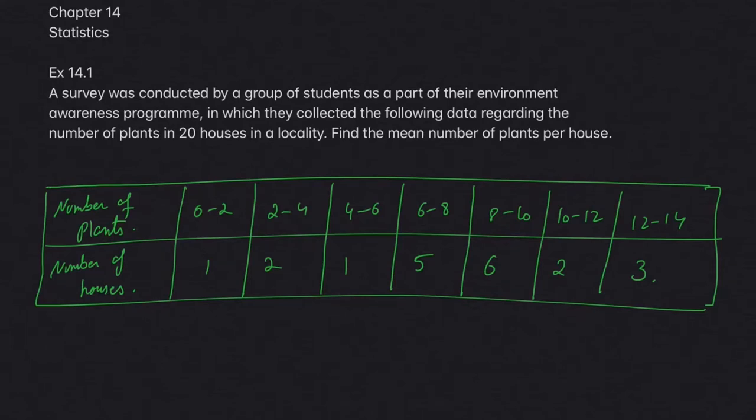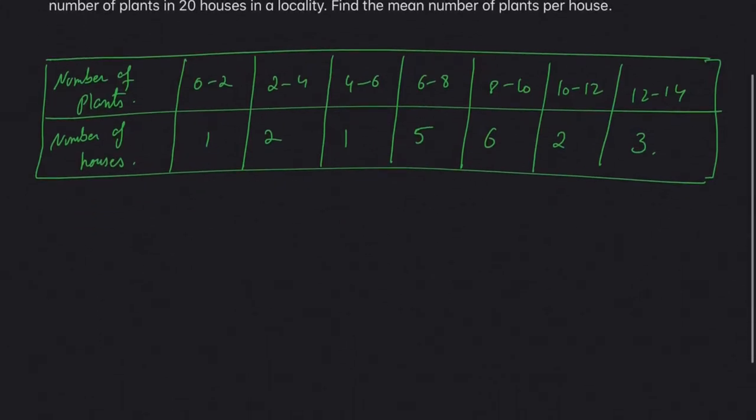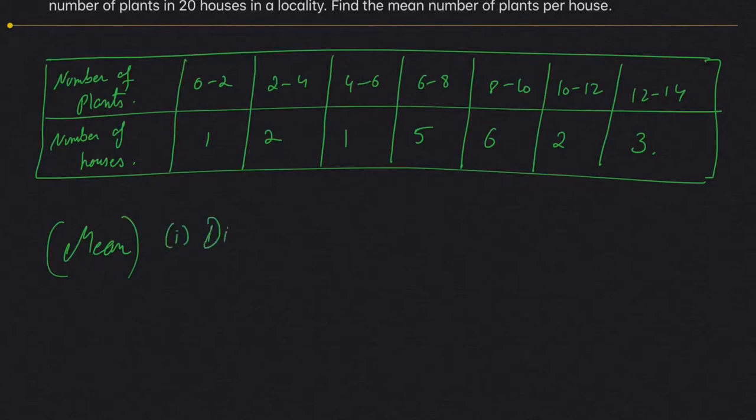Okay, so welcome back. We'll start off with the exercise. As mentioned earlier, first we will discuss mean of grouped data where we will be learning about three methods: the direct method, the assumed mean method, and the third one will be the step deviation method.